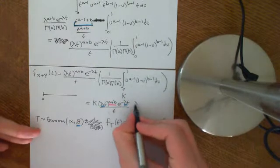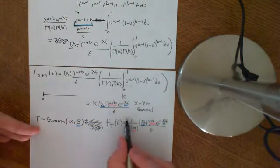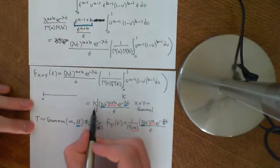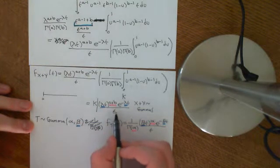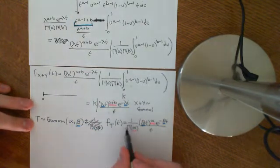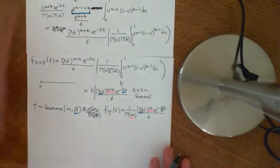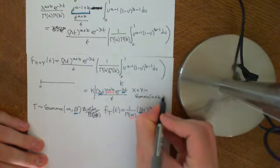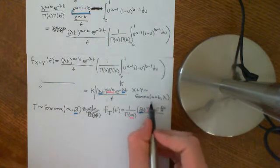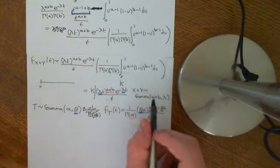So X+Y is going to be gamma distributed. The constant out front is just a constant, so all we need to do is say that implies this constant must equal 1 over Γ(α). Ignore the constant — it's just whatever you need to make this integrate to 1. This is a gamma distribution, no ifs or buts. It has all the features of a gamma distribution, and the constant is just whatever was needed to integrate to 1. Therefore it equals 1 over Γ(α), because that is what is needed to make this integrate to 1, and the two expressions are identical.